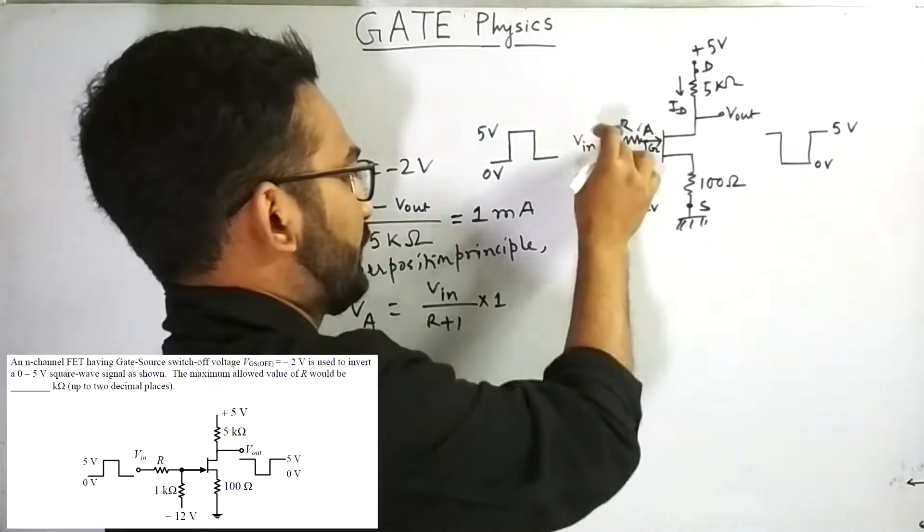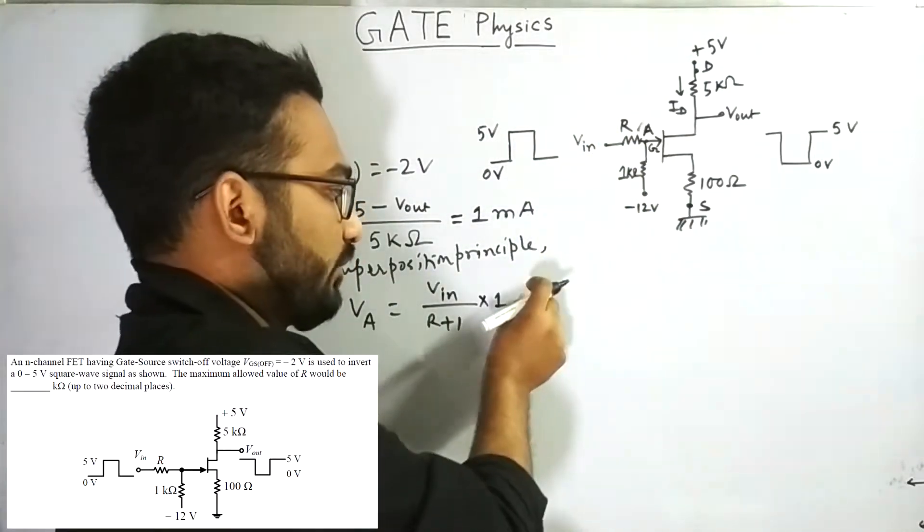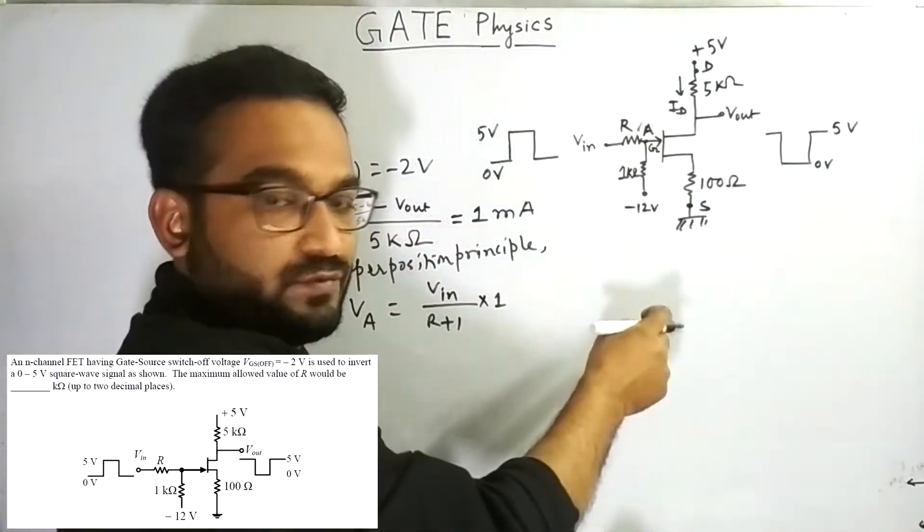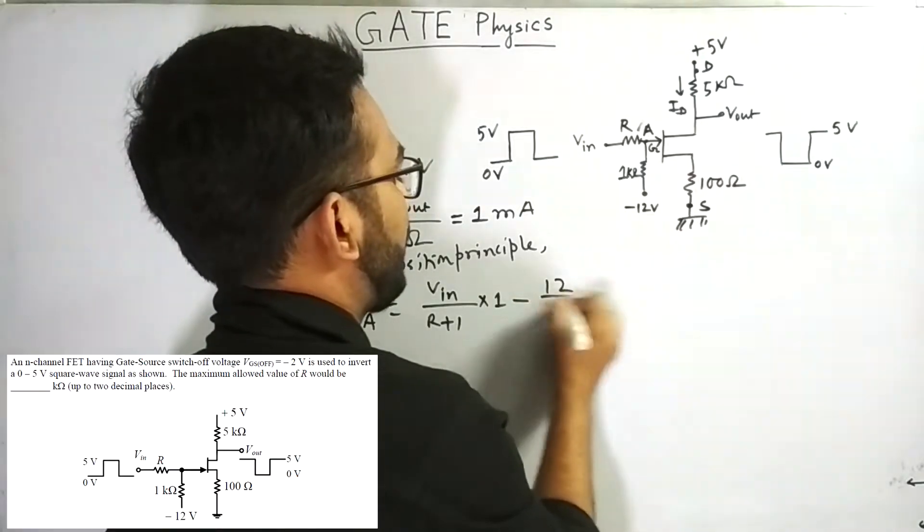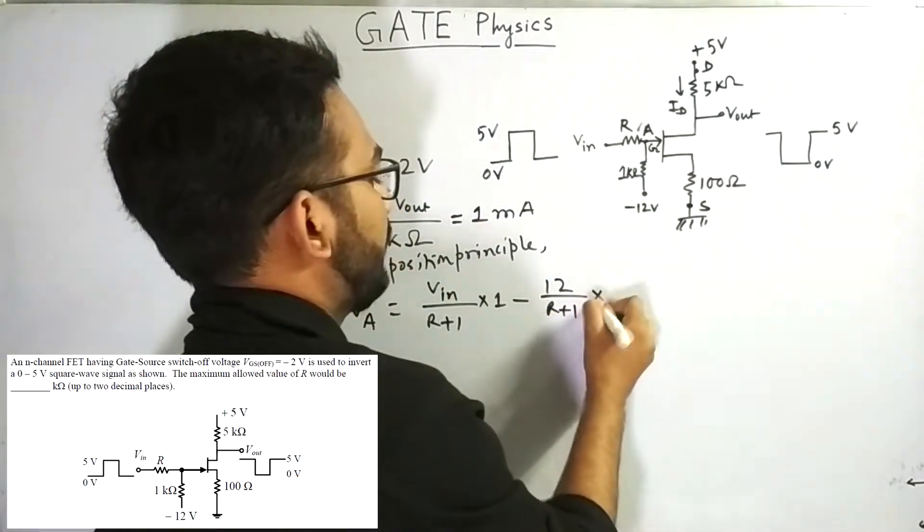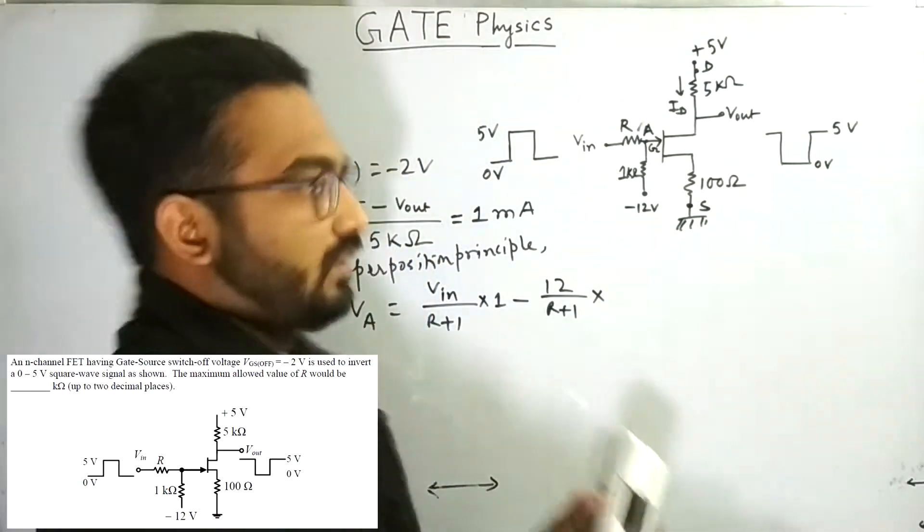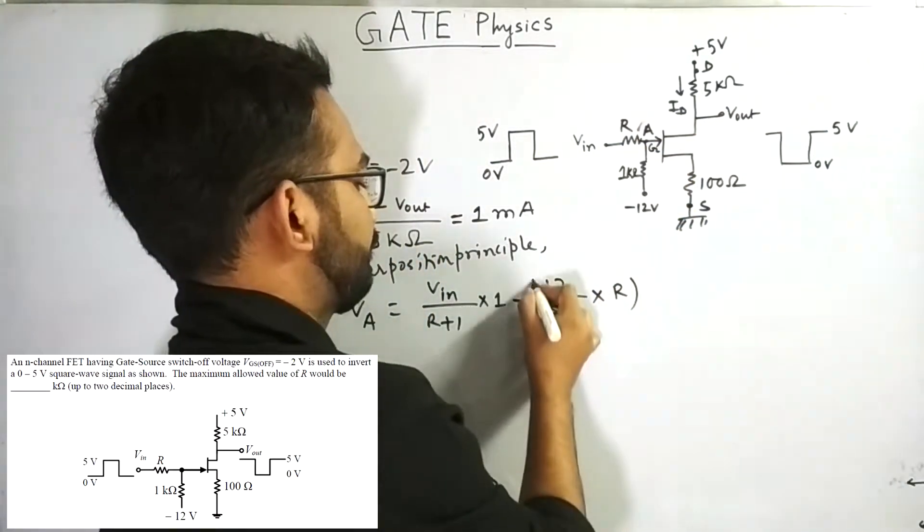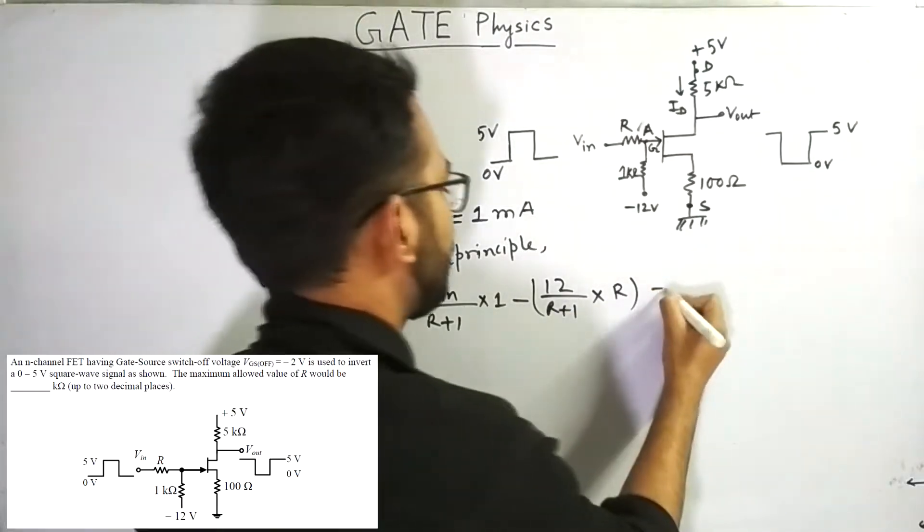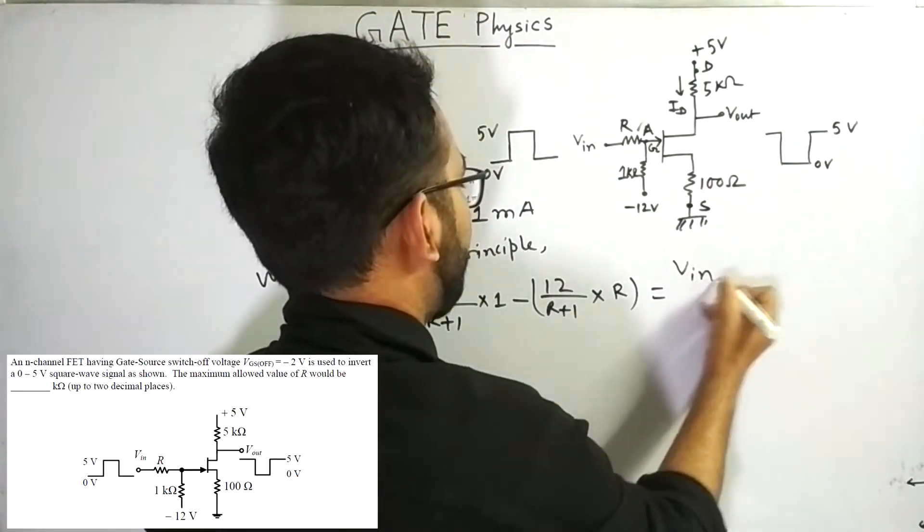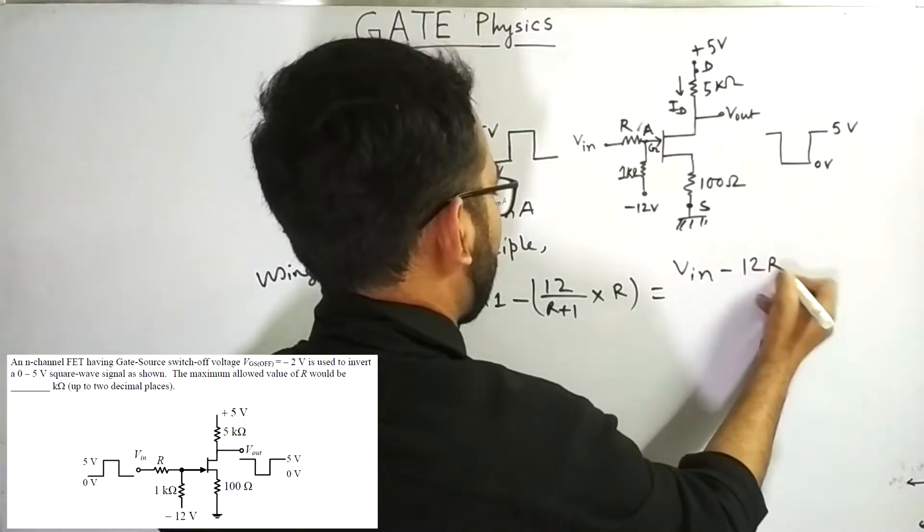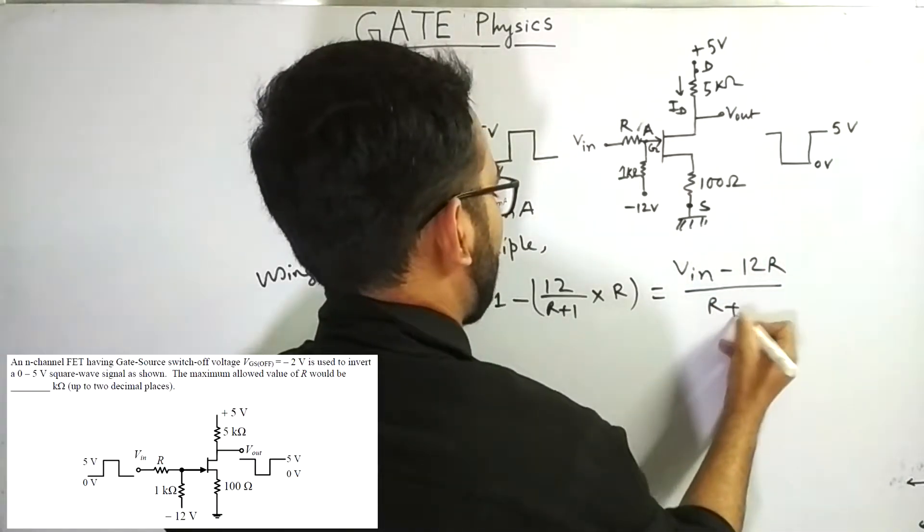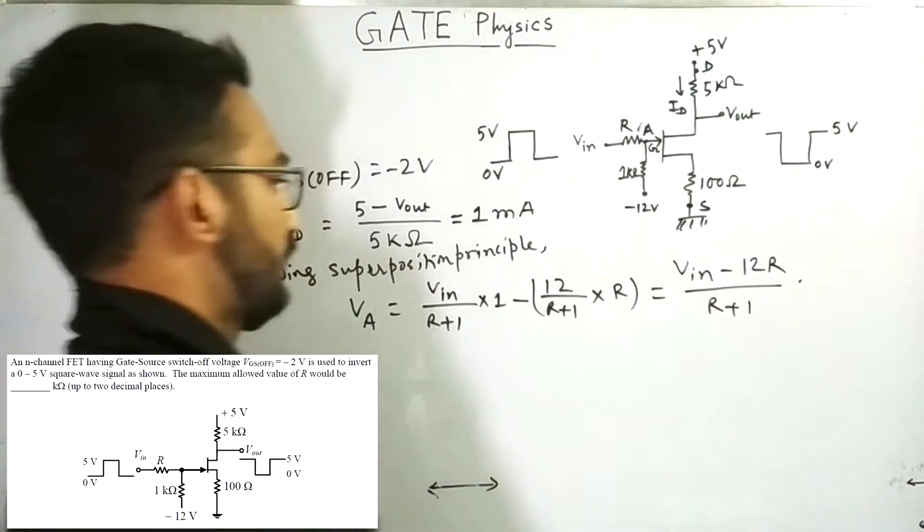In the next case, we are equating this term to be 0 and a plus sign will appear but here it is minus 12. So minus 12 by R plus 1 and we are taking the voltage drop across this resistance R. So this is equal to V in minus 12 R by R plus 1.